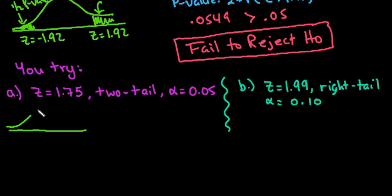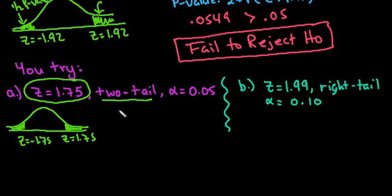Now that you've taken time to answer the questions, let me draw out the picture. Since this is a two-tail, I'm going to shade both tails. My z is negative 1.75 and positive 1.75. Since it's two-tail, it's always both this value and its opposite.